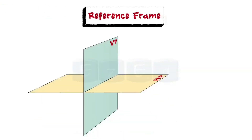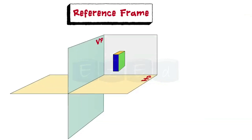Now, let us place an object in the first quadrant. The third plane shown here is the profile plane, PP, or auxiliary vertical plane, AVP.